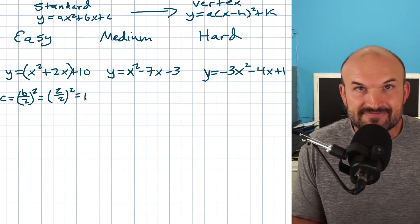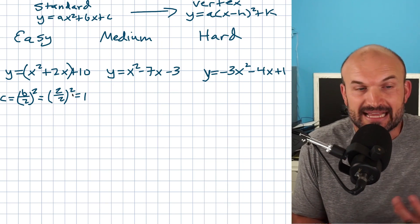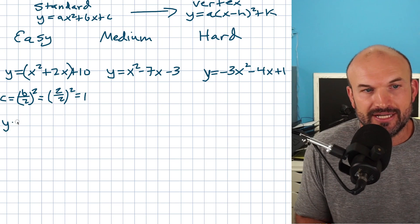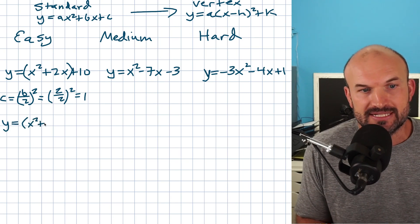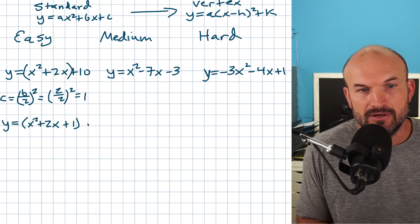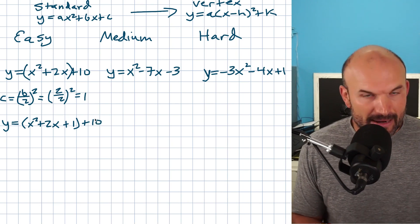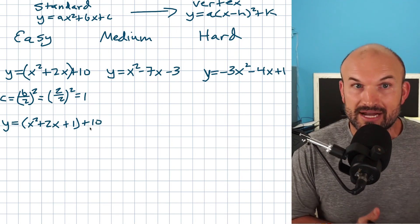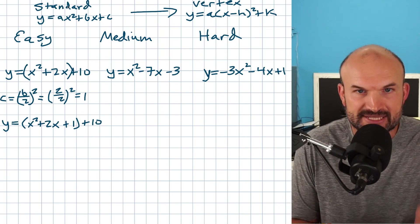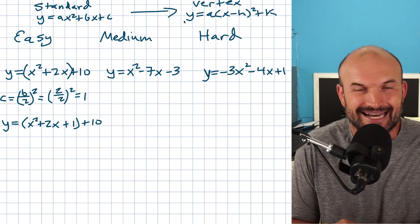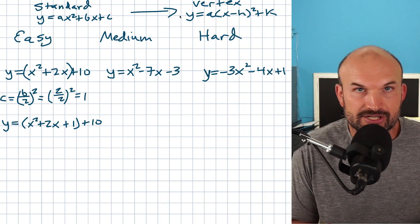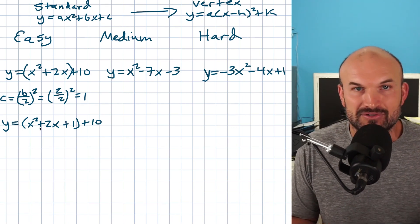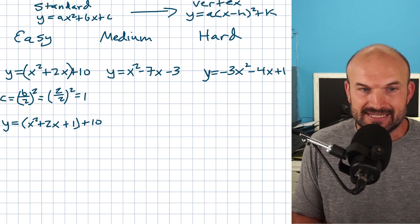We take this value c that creates the perfect square trinomial and plug it inside the parentheses. So it looks like y equals x squared plus 2x plus 1, plus 10. Now remember, whatever you do on one side you have to do on the other. But our goal here is to go from standard form to vertex form, so I don't really want anything with this y. Rather than adding on both sides, why don't we just add and subtract on the same side?